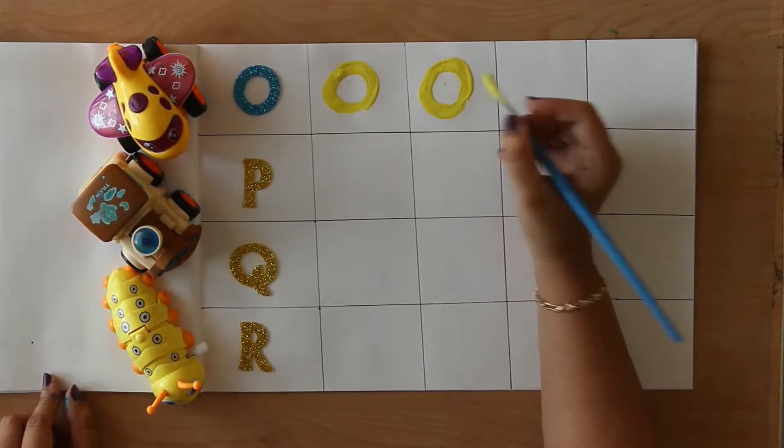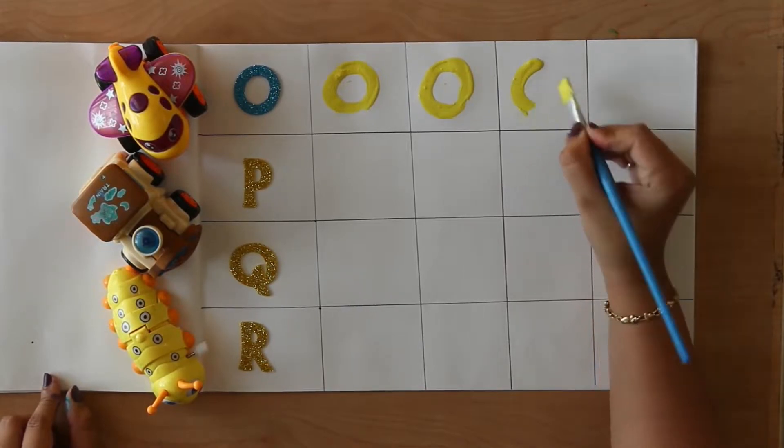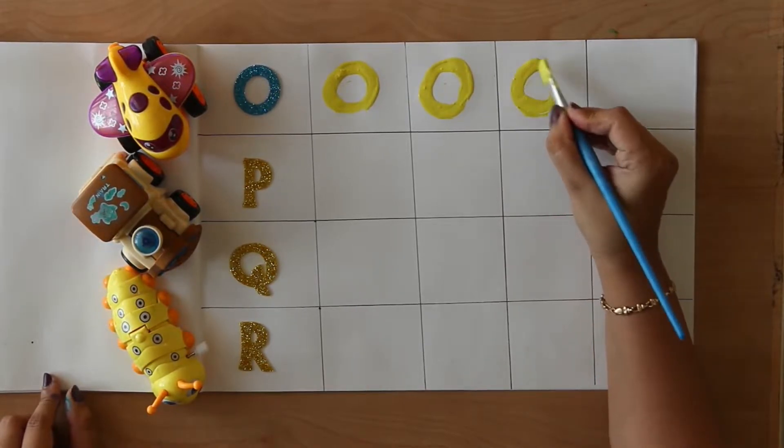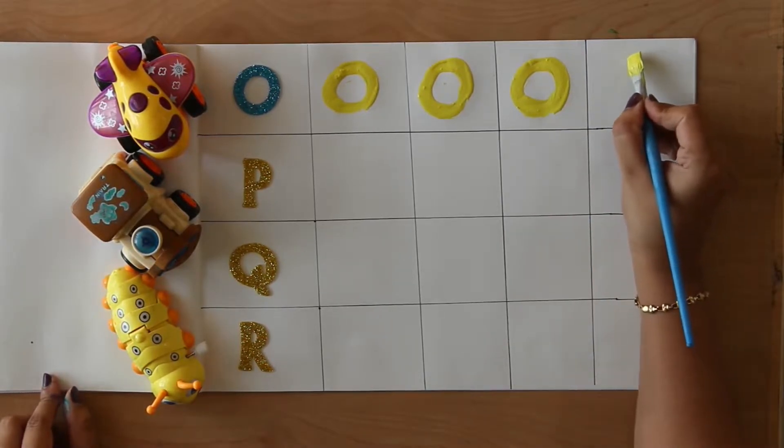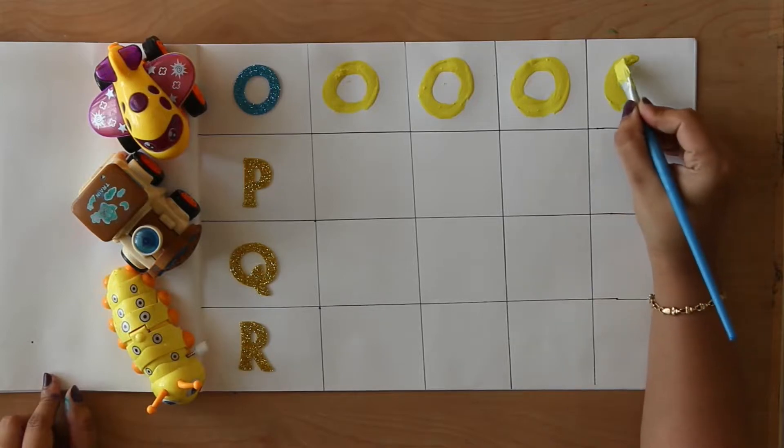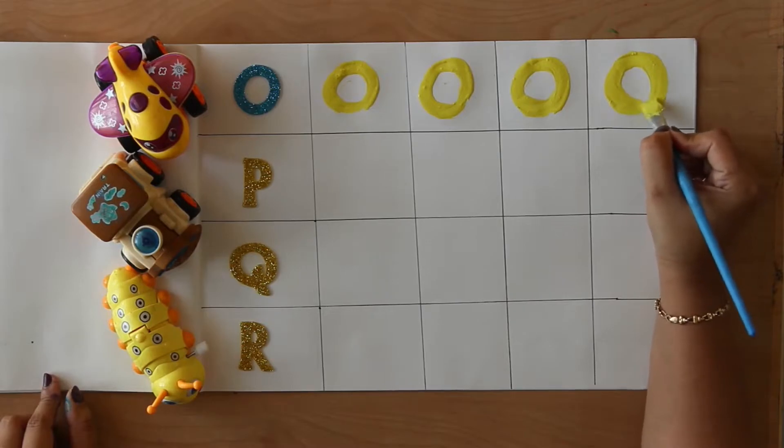O. O for owl. Owl means Ullu. O. O for ostrich. Ostrich means Shuturmurgh.